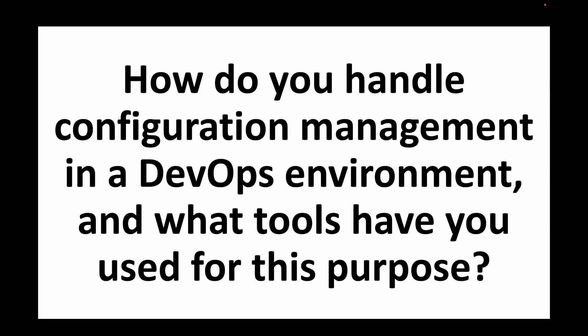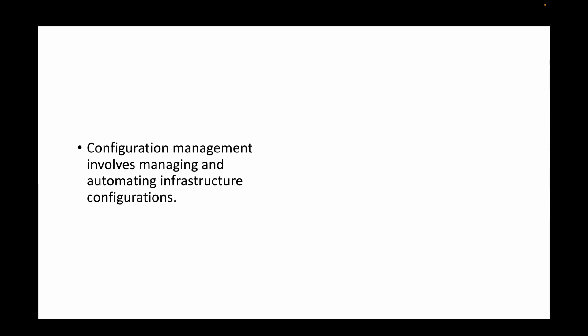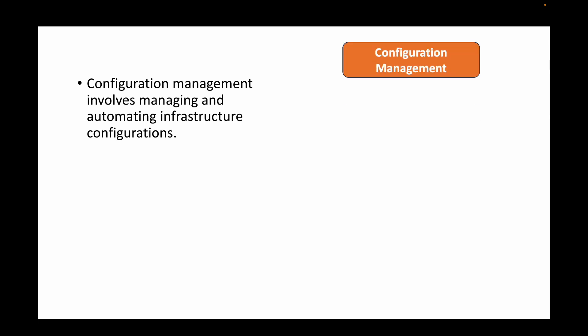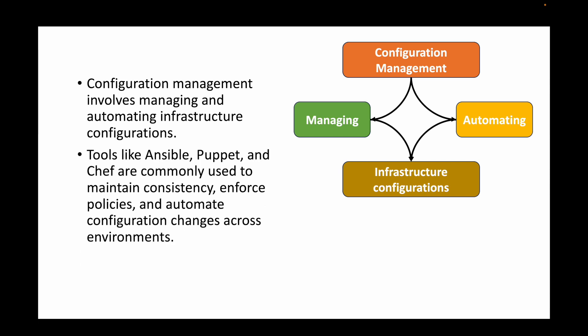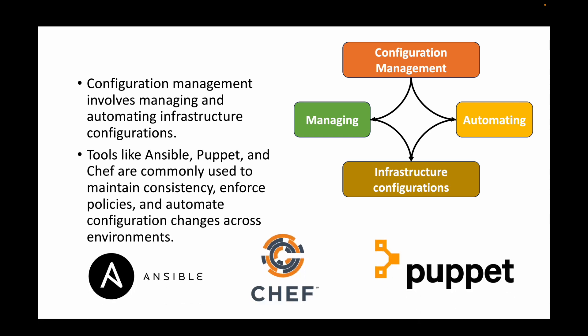The next question is: how do you handle configuration management in a DevOps environment and what tools have you used? Configuration management is used to manage and automate infrastructure configurations — for example, installing packages, copying files, or updating configurations across 500 servers. Popular tools include Ansible, Chef, and Puppet, which maintain consistency, enforce policies, and automate configuration management across environments.